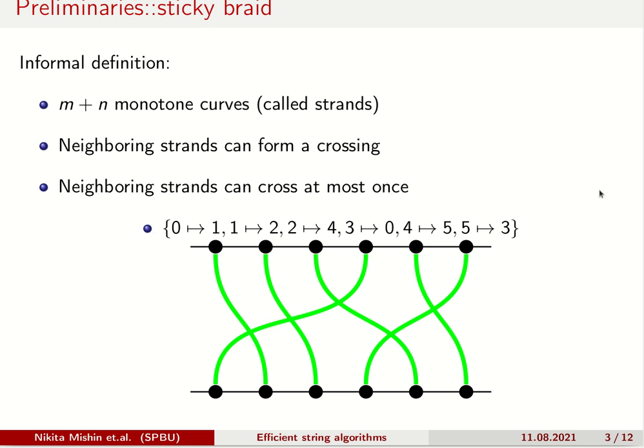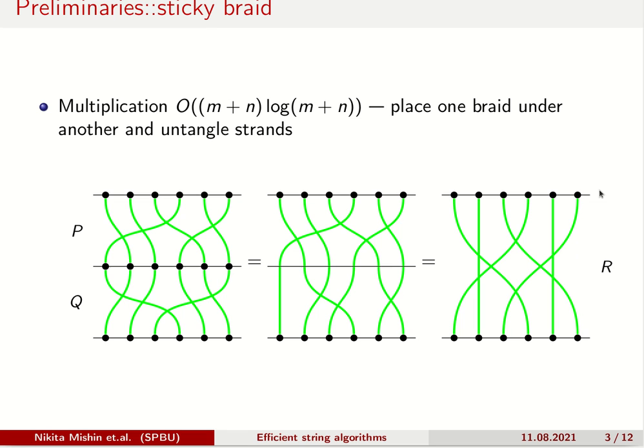They are similar to permutations and also can be represented via permutation matrices. For example on the slide you can see a sticky braid of size 6 and its associated representation both visually and the permutation. In regards to multiplication, it's simply placing one braid under another and strands uncrossing from top to bottom where it's needed. Important to know that recently there was presented a fast algorithm for sticky braid multiplication.